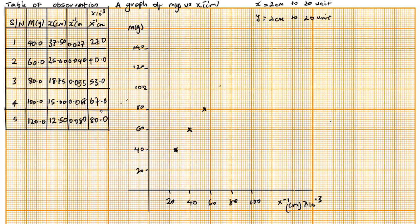When m is 100 on the m-axis, x inverse is 67. So 67 — this is your 60, so 67 should be somewhere here: 62, 64, 66 — 67 should be somewhere here. Next, when m is 120, x inverse is 80. So 80 is here, and we are done plotting our points.